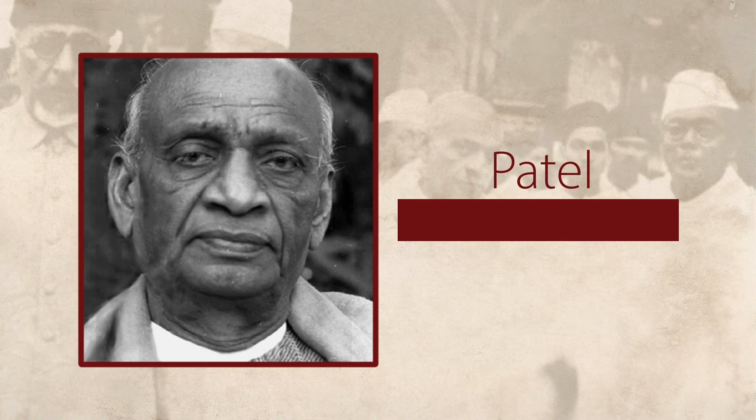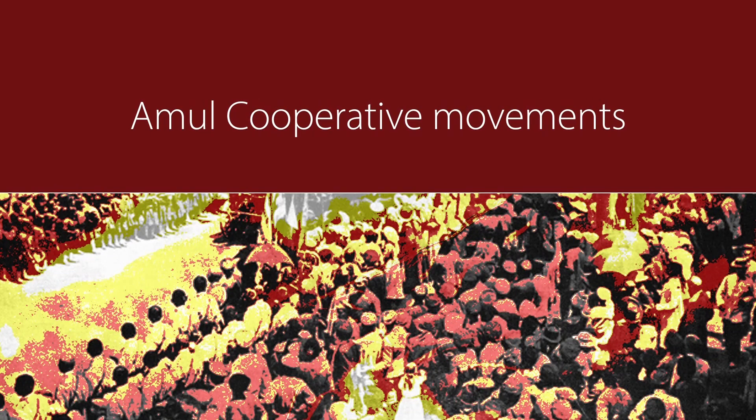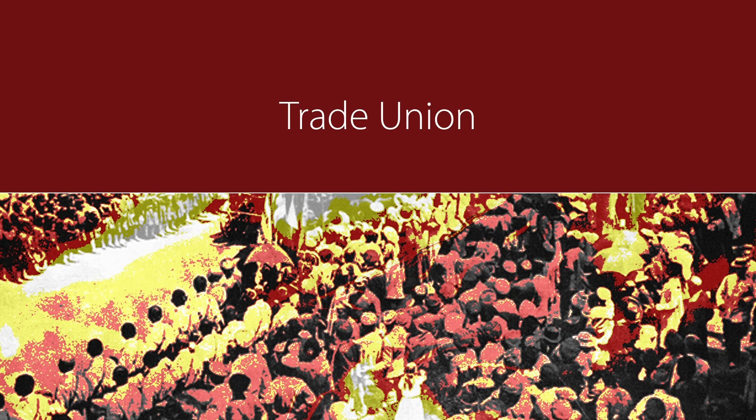Let's now begin the second part of the lecture on Patel's ideas of governance, in which we will be discussing his contribution to cooperative societies, where he played a stellar role. One was Amul, in which he played a key role; another was the Ahmedabad municipality in his early years from 1917 to 1927. The third was the trade union congress, where CPI-controlled labor was disrupting industrial production.